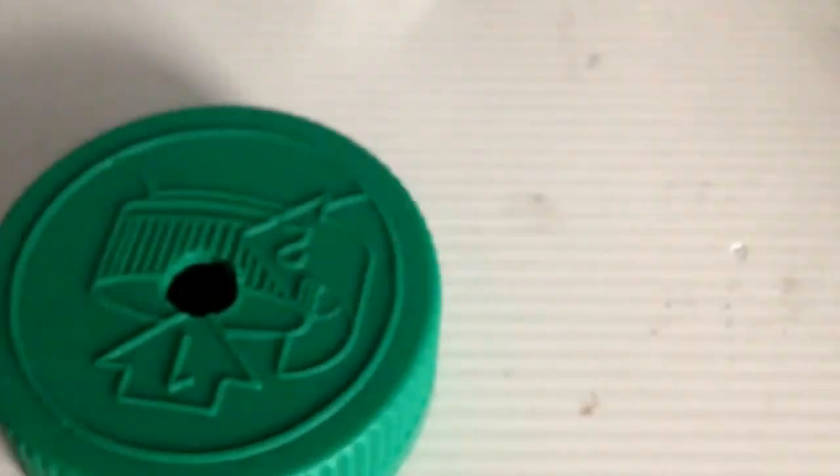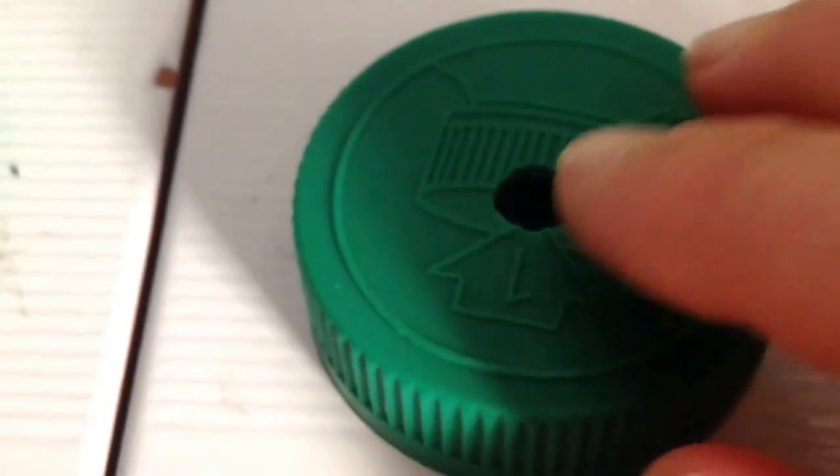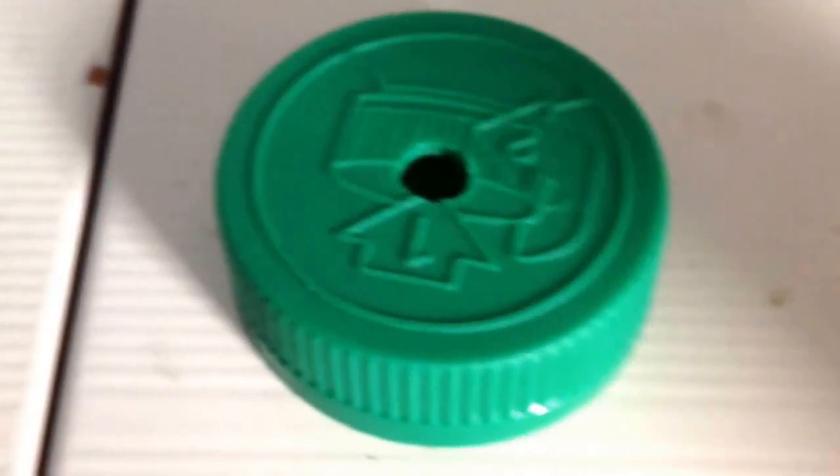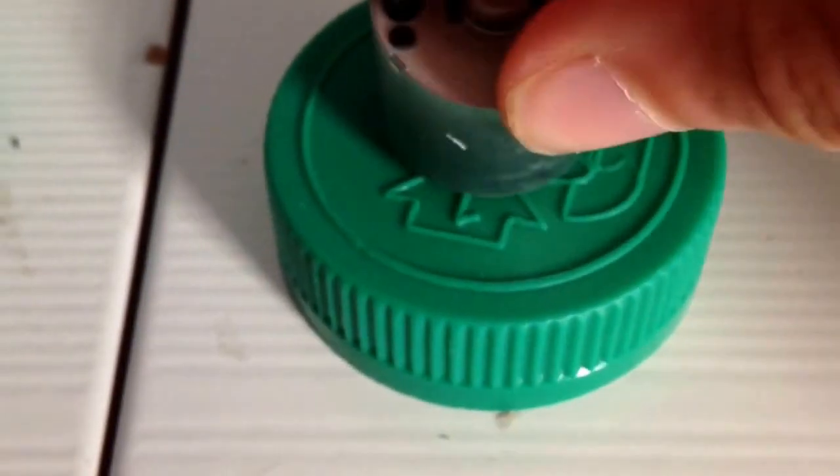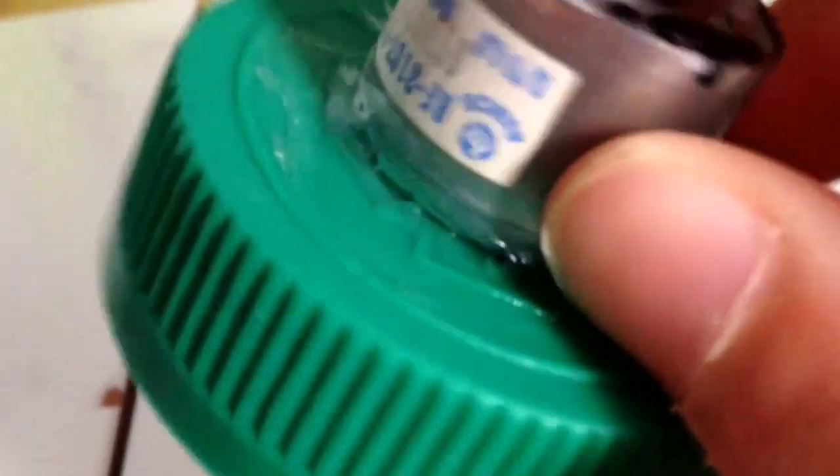To begin, we'll drill a hole in the middle of the cap. Now you'll need to place the motor right on so it fits exactly, and then we'll glue gun that. Once you got the motor glued in just like that.